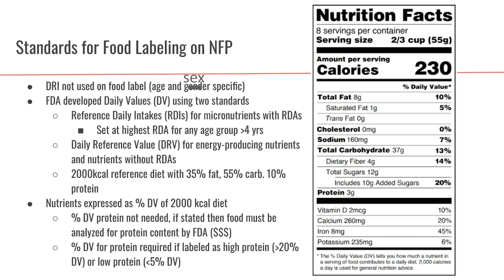When you're using the nutrition facts panel, what you have to think back to is this 2,000 kilocalorie reference diet with 35% fat, 55% carb, and 10% protein — and how similar or applicable that is to you, or to the person making decisions based on this nutrition facts panel.